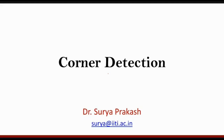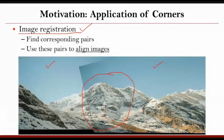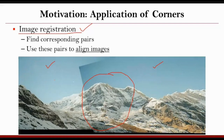In today's class, we are going to discuss corner detection. Let us first see some motivation and then we'll go to the details. One of the applications where this technique can be used is image registration. In image registration, we have two or more images given and we want to stitch them to make a larger picture. You have two images — one covering some part of a scene, the other covering another part — and you want to combine them to make a bigger picture. This is exactly what we do when we create a panoramic image: we take multiple shots and stitch them together.